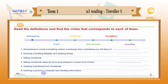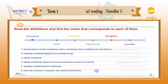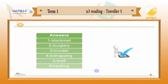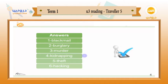For example, entering a person's computer and stealing information — you might have heard a word related to that, which might be theft or hacking. So it's not too difficult. Now let's go through the answers together and check if you got the right answer from the first time. Number one: blackmail. Number two: burglary. Number three: murder. Number four: kidnapping. Number five: theft. And number six: hacking is the right option. Well done to those who got it right first time.